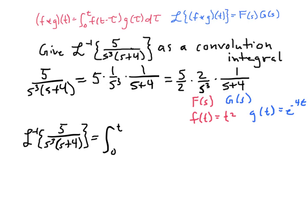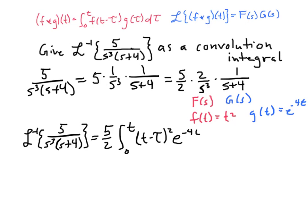Putting five-halves out in front of the integral from zero to t, we have f of t minus tau, which is the quantity t minus tau squared, times g of tau, which is e to the minus four tau, d tau. And so we've found the desired inverse transform as a convolution integral.